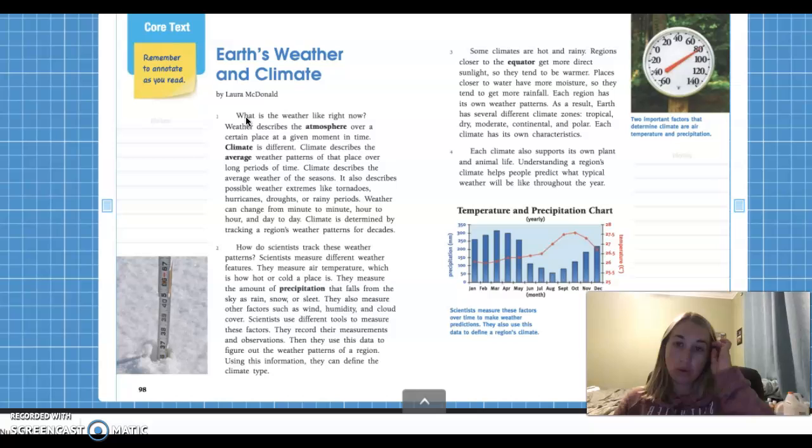Paragraph one. What is the weather like right now? Weather describes the atmosphere over a certain place at a given moment in time. Climate is different. Climate describes the average weather of the seasons. It also describes possible weather extremes like tornadoes, hurricanes, droughts, or rainy periods. Weather can change from minute to minute, hour to hour, and day to day. Climate is determined by tracking a region's weather patterns for decades.